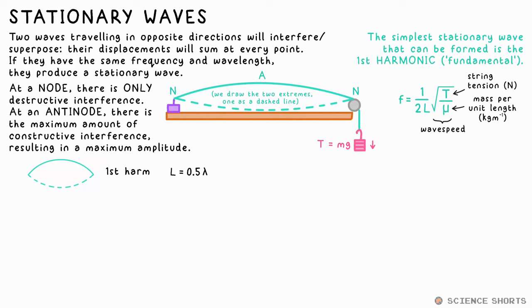Incidentally, root T over mu actually gives you the wave speed. Double this fundamental frequency, and we get the second harmonic. L equals lambda in this case. Third harmonic, L equals one and a half lambda, and so on.